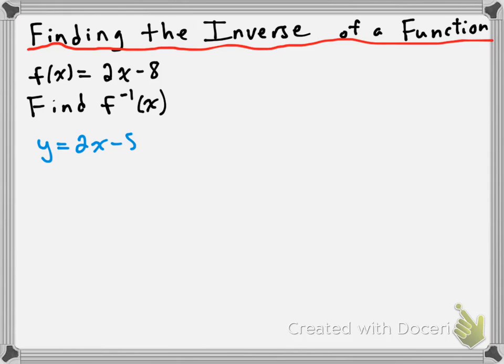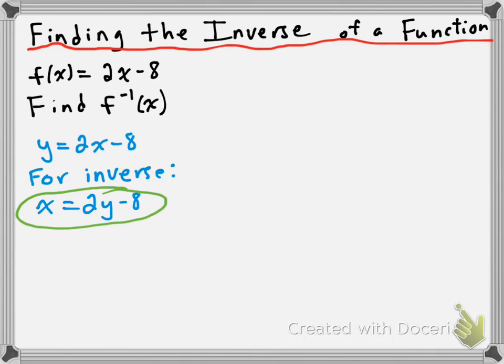Step number one: we're going to replace f of x with y to put this into x, y notation. This is just a little bit cleaner looking. So instead of writing f of x equals 2x minus 8, I'm going to write y equals 2x minus 8. Next, we know that the domain and range get switched when you take the inverse, which means that the x values and the y values get switched for the inverse. So to find the inverse, we're going to switch the x and the y values in our equation — where y was, we put x, and where x was, we put y. That essentially switches the domain and range of the function, which is what we require.